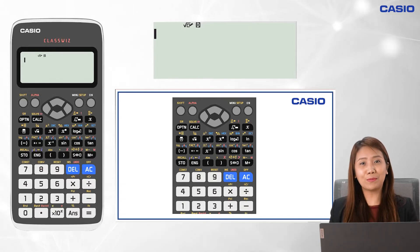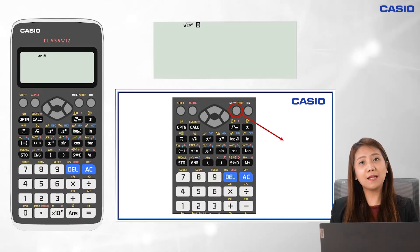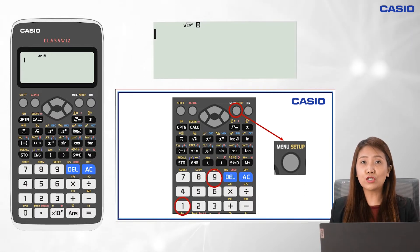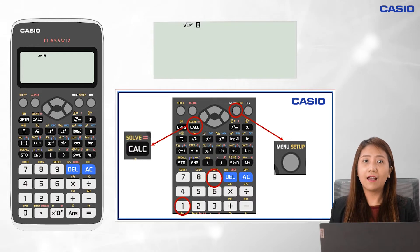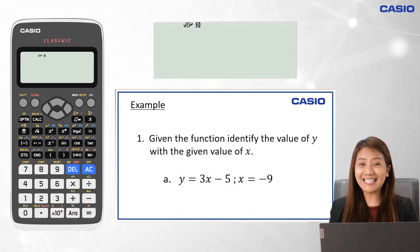In this lesson, we will be exploring Menu 1, which is the calculate mode, and Menu 9, which is the table mode. We will also be using the calc key as we learn and teach domain and range with Casio ClassWiz.